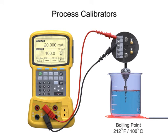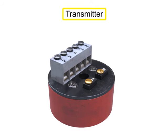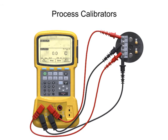After the sensor accuracy is confirmed, the next step is verifying the accuracy of the transmitter using the process calibrator. The calibrator provides an input signal to the transmitter that simulates the output of the sensor at multiple measurement points.